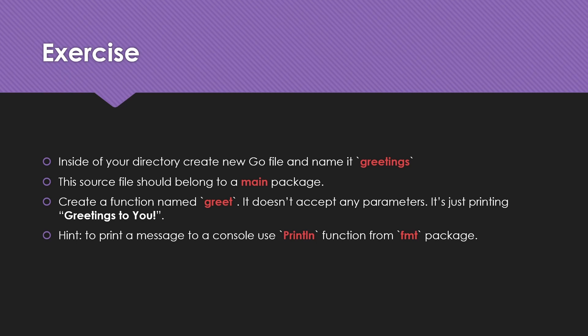Inside of your directory create a new Go file and name it greetings. This file should belong to a main package. Create a function named greet. It doesn't accept any parameters — it's just printing greetings to you. To print a message to a console use the println function from the fmt package. Pause the video and try. If you don't want to do it on your own, we can do it together.